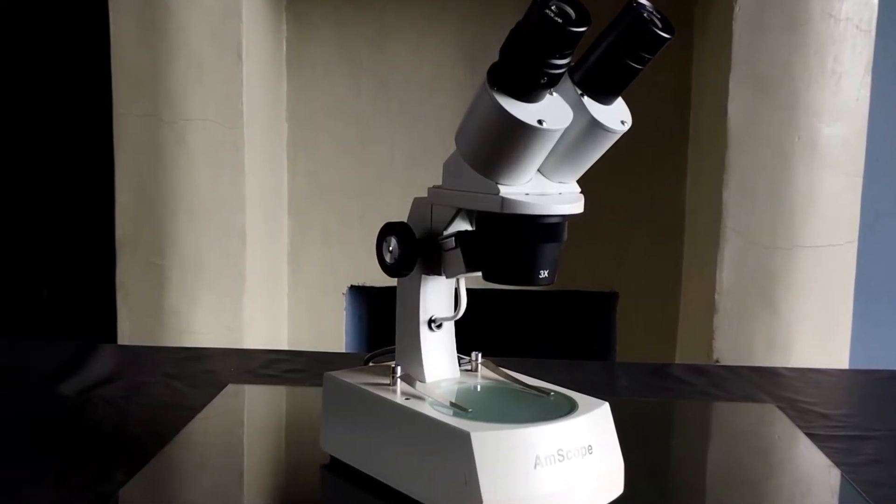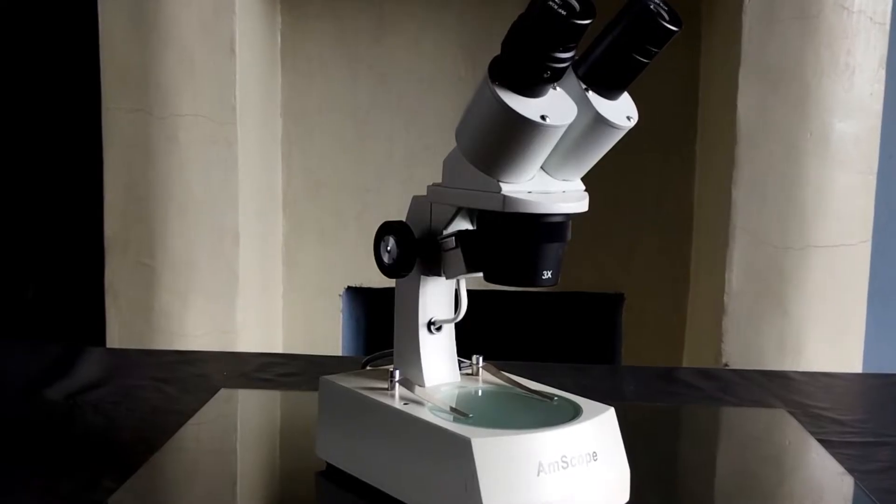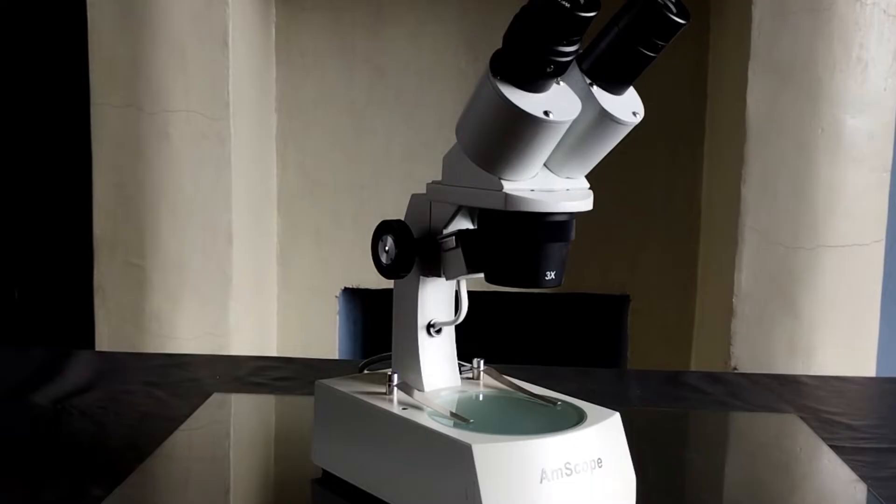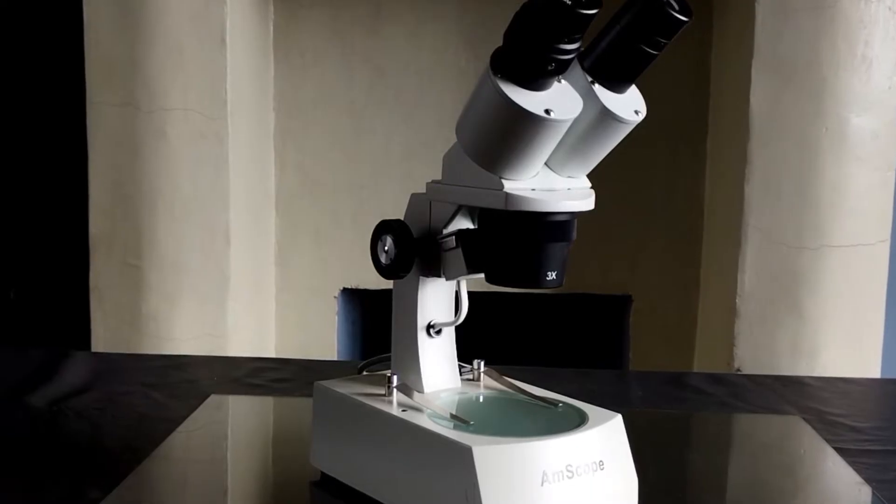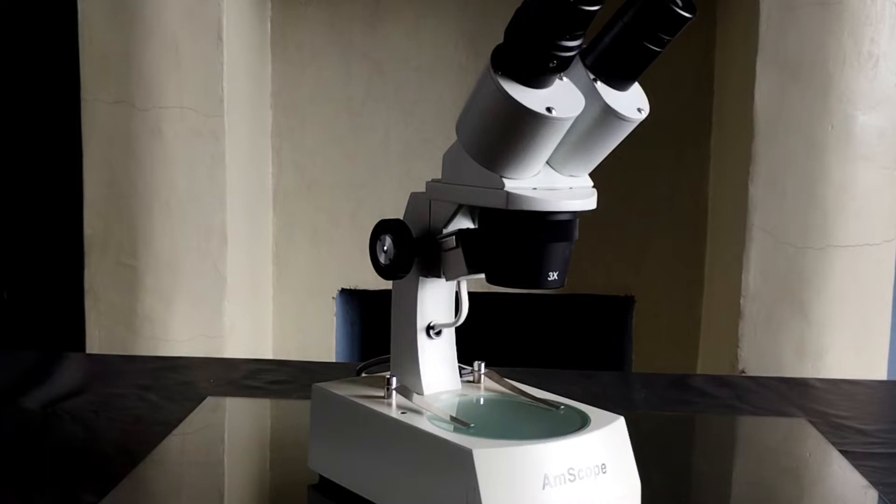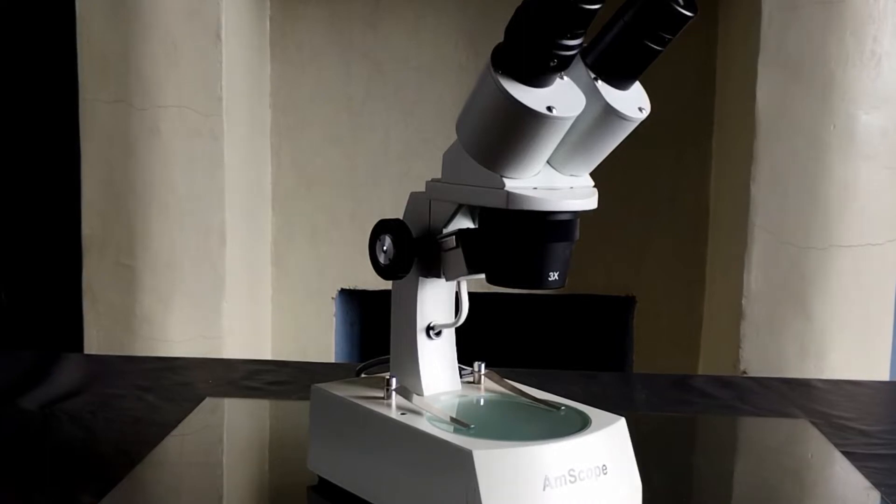The Stereo Microscope is widely used for surface examination and study of organisms, electronic components, rocks and minerals, etc. It is also commonly used to assist in the dissection of minute parts of organisms that do not require extremely high magnification but are at the same time too small to be done with the unaided eyes.